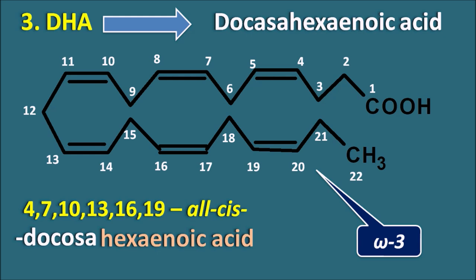In summary, the three important omega-3 fatty acids are ALA (alpha-linolenic acid), EPA (eicosapentaenoic acid), and DHA (docosahexaenoic acid). These omega-3 fatty acids provide health benefits by decreasing inflammation, controlling triglyceride and cholesterol levels, and maintaining the balance of prostaglandin biosynthesis, thereby reducing inflammatory disorders. Fish oil is a key source of EPA and DHA, while flaxseeds and soybeans are sources of linolenic acid. If you like this video, please subscribe to our channel.